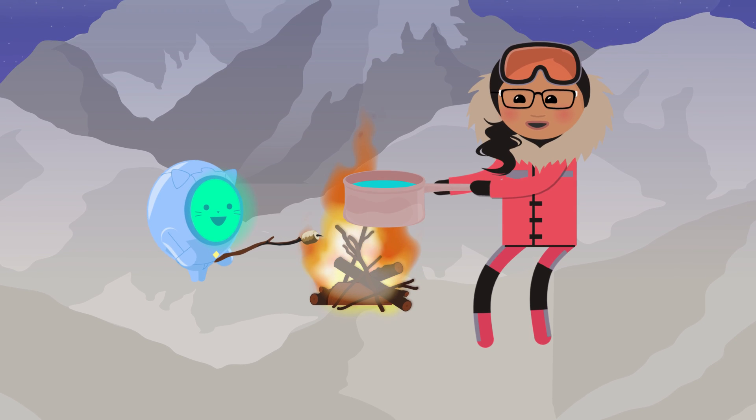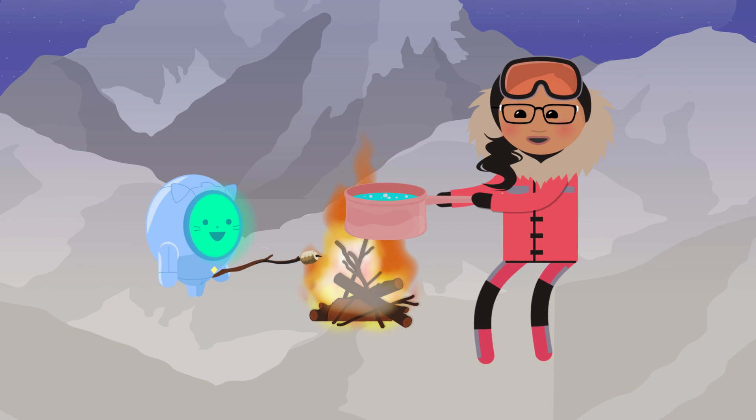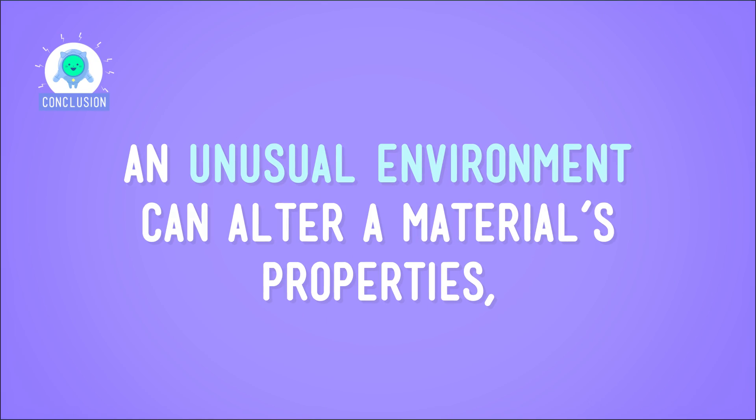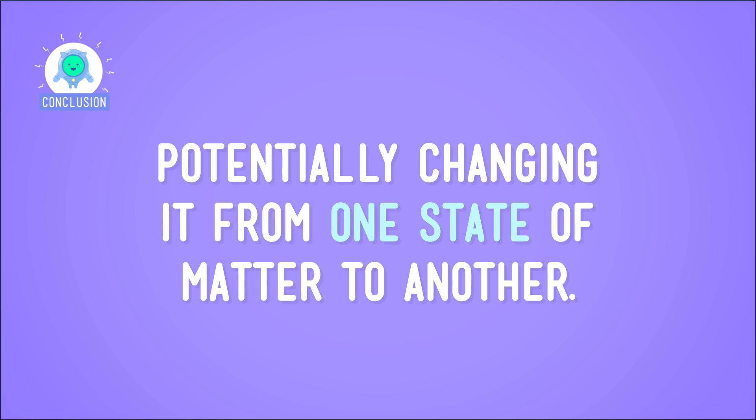So, when you put this glass of water in an extreme, low-pressure environment like Mount Everest, or in space, where there are even colder temperatures and no pressure, its properties, like its boiling point, change dramatically. And now we know that normal, everyday materials behave in unusual ways when placed in unusual environments. That's because an unusual environment can alter a material's properties, potentially changing it from one state of matter to another. Who knew an ordinary glass of water could do so many different things?